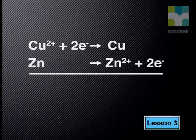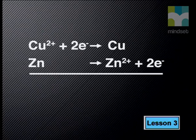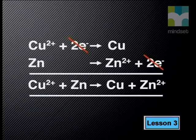By adding half reactions together, we complete a whole reaction consisting of reduction and oxidation — quite a mouthful, so we shorten the name to redox. Now let's take the half reaction equations and add them together. Bear in mind that charge is always conserved and the number of electrons lost equals the number of electrons gained. These are the two half reactions: Cu²⁺ + 2e⁻ → Cu (reduction), and Zn → Zn²⁺ + 2e⁻ (oxidation). The electrons cancel out, and we add the reactants and products together for a complete redox equation.